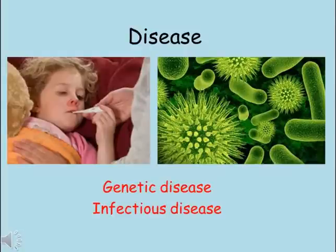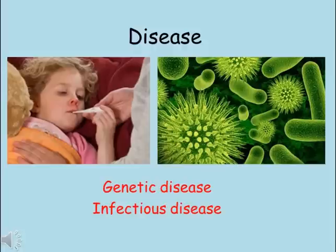A disease is when the body is not functioning normally. Something is stopping the body from doing what it can usually do, and this makes a person unwell. Some diseases can be caused by genes and these are inherited. Other diseases are infectious, which means you can catch them from other people who already have the disease. This video will look at both types of disease, what causes them and how they affect humans.